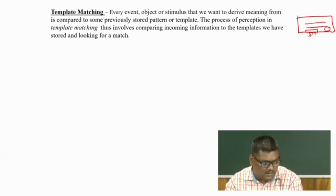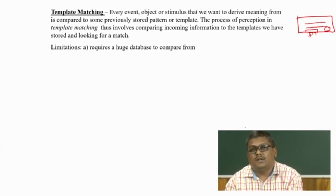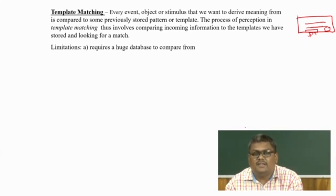Now, there are several obvious limitations of the template matching model. One of the first is the requirement of a huge number of templates. By its very design, the template matching model requires a huge number of templates stored in the brain. Since the brain has a fixed capacity and cannot store an unlimited number of templates, this model lacks an advantage over other models.